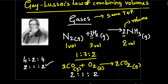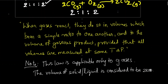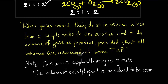Write down the definition of Gay-Lussac's law of combining volumes: when gases react, they do so in volumes which bear a simple ratio to one another and to the volume of the gaseous product, provided that all volumes are measured at the same temperature and pressure. Note: this law is applicable only to gases. The volume of solid or liquid is considered to be zero — you don't consider it.